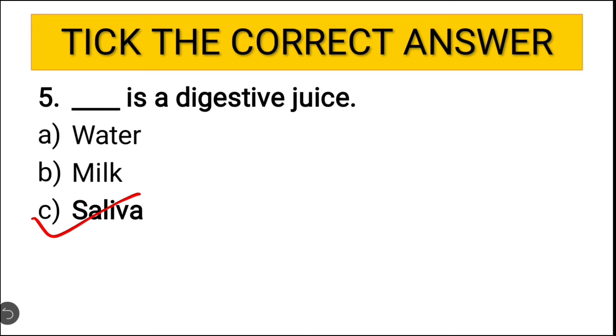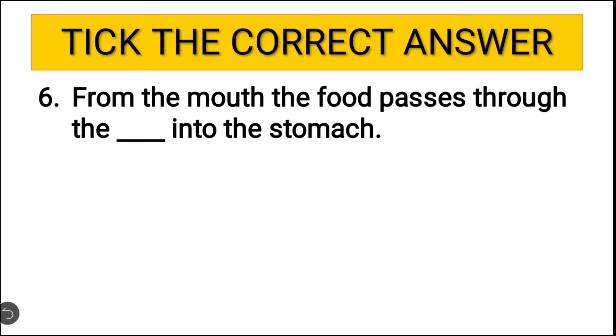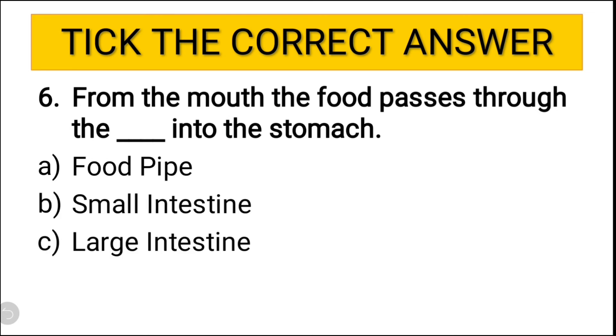Let us see sixth question. From the mouth the food passes through the dash into the stomach. The options are food pipe, small intestine, large intestine. From where does food pass into the stomach? The answer is food pipe. Food passes through the food pipe into the stomach.